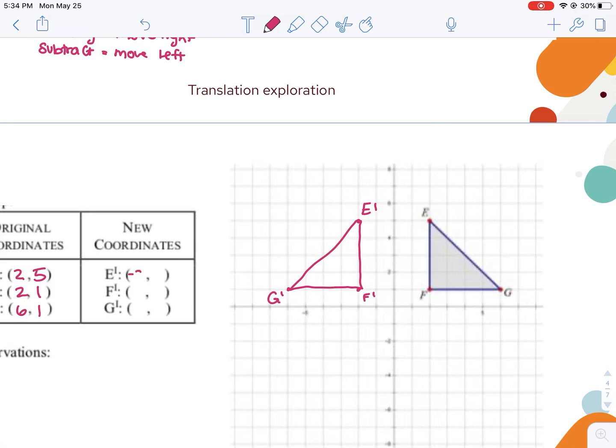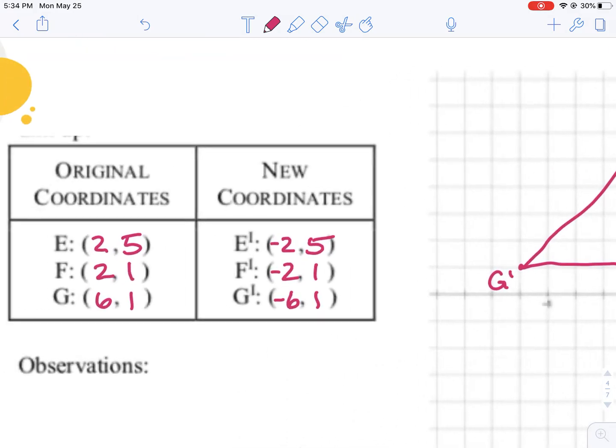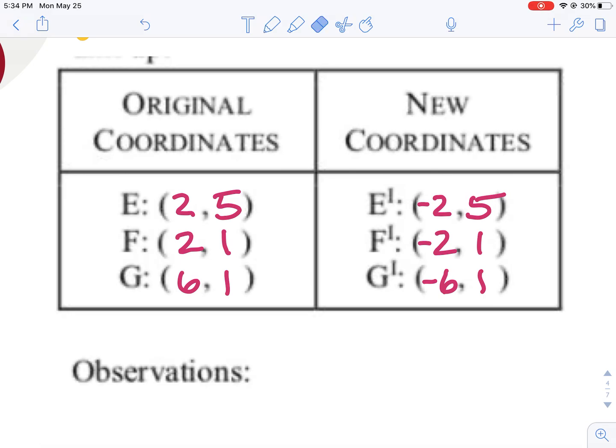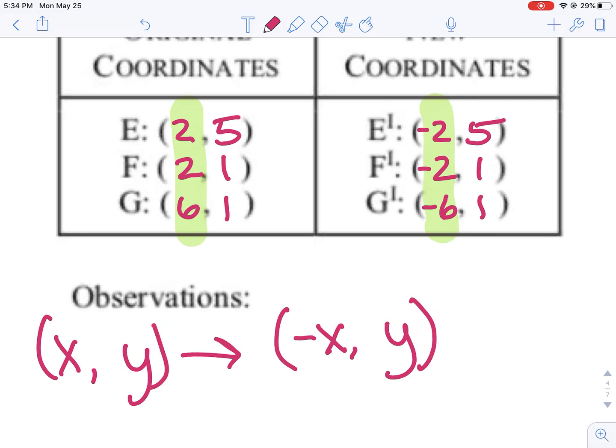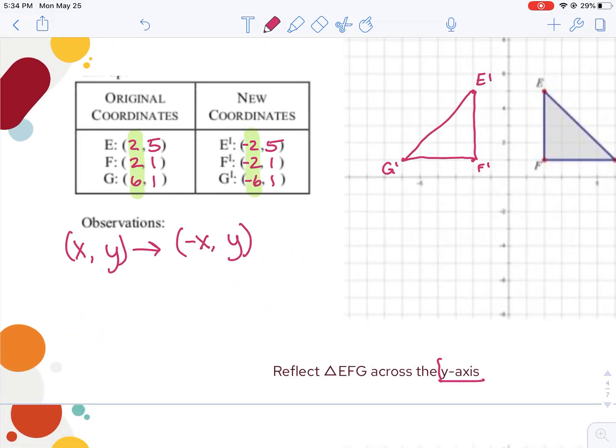E prime landed at negative 2, positive 5. F prime landed at negative 2, positive 1. If I look just at my numbers, I can see that my Y values stayed the same. My X values became negative. So I could write this rule as XY becomes negative X, positive Y. And this is counterintuitive because we reflected across the Y axis. So our gut says, shouldn't we make the Y negative? But we're folding across the Y, so the X is the one that becomes negative.